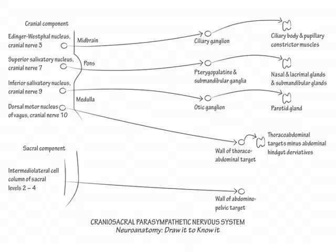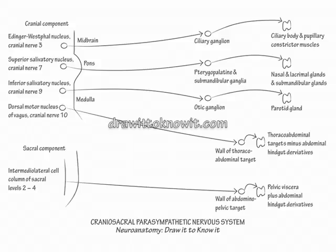The sacral parasympathetic system innervates the pelvic viscera plus the abdominal hindgut derivatives. Sacral parasympathetic activation increases blood flow to the gut, increases gut peristalsis and secretion, provides urinary bladder detrusor muscle tone, and genital engorgement. This completes our drawing of the motor component of the craniosacral parasympathetic nervous system.